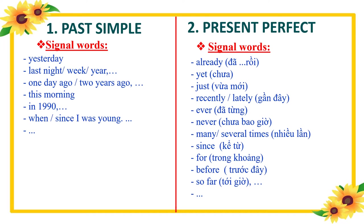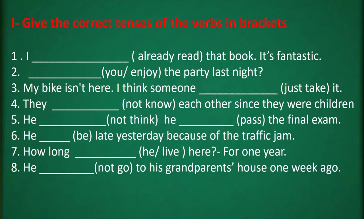Remember, these signal words are very useful — they can help you recognize the tenses easily. So you have to learn all of them by heart. Now let's do some exercises. Exercise 1: write the correct tense of the verb in parentheses. This exercise will help you review four tenses: Present Simple, Present Perfect, Past Simple, and Future Simple. You have one minute to do it.